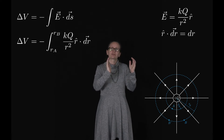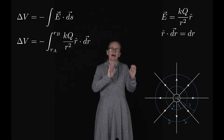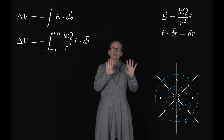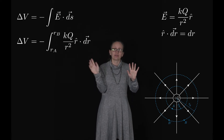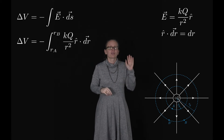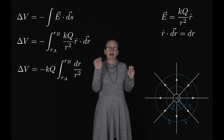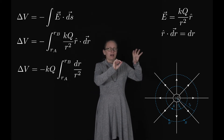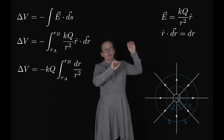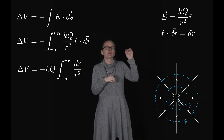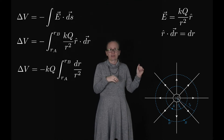Looking at the dot product part: R̂·dr — because these are parallel and R̂ is a unit vector, this is simply equal to dr. So we can write the integral as -KQ times the integral from RA to RB of dr/R².